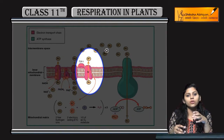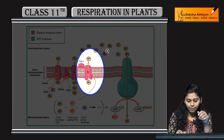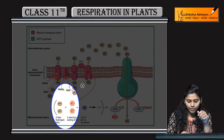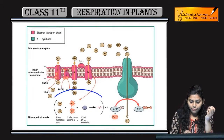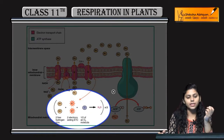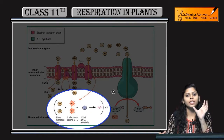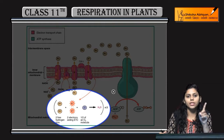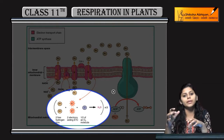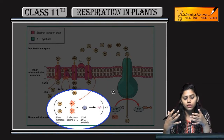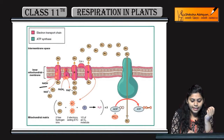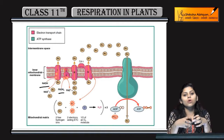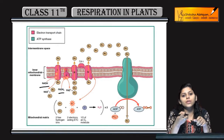The electrons from cytochrome c go into complex four. From complex four, electrons are transferred to the mitochondrial matrix, where they react with free oxygen molecules and hydrogen to form water molecules. This is the oxidation of NADH and FADH2 happening.